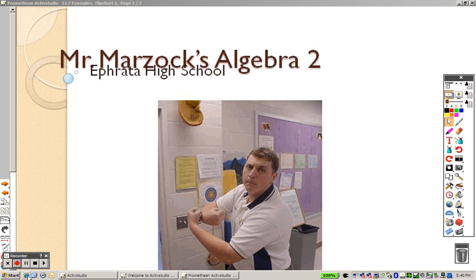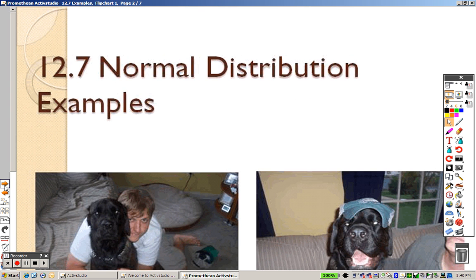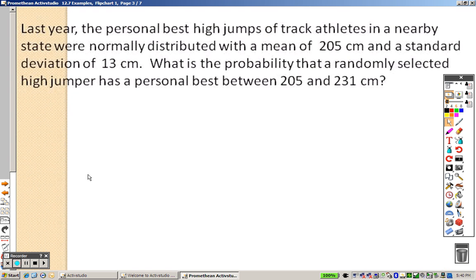Okay, 12.7, and 12.7 is the normal distribution, so we're going to do some examples here.